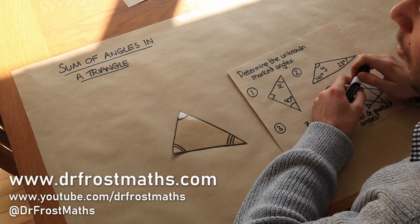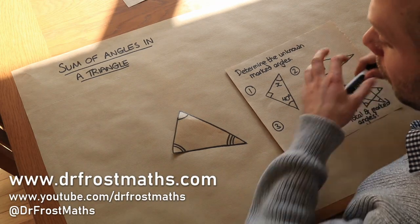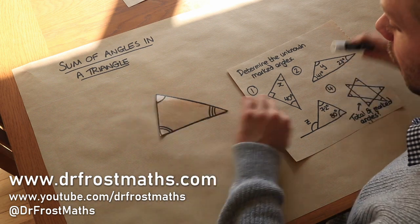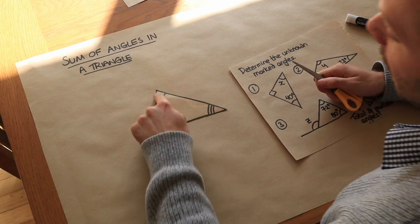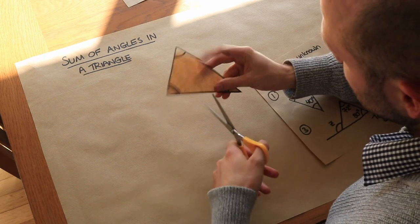Hello and welcome to this video on the sum of angles in a triangle. Now I've got a triangle here and it's got three different angles and let's see what happens if we add these angles together by cutting up the shape.